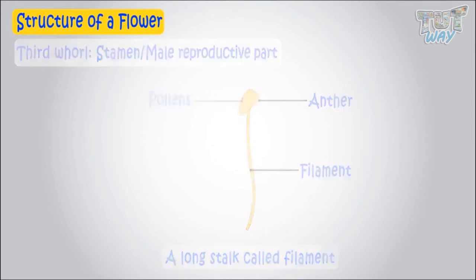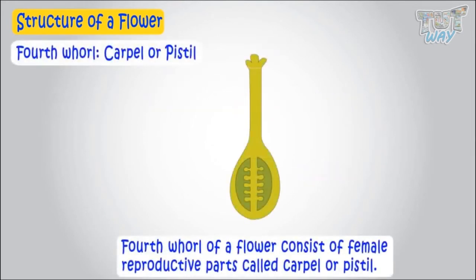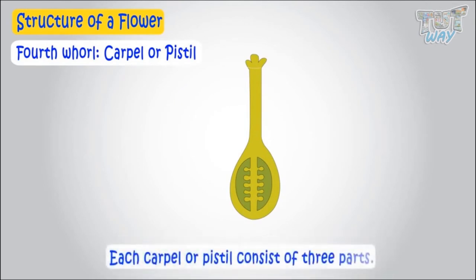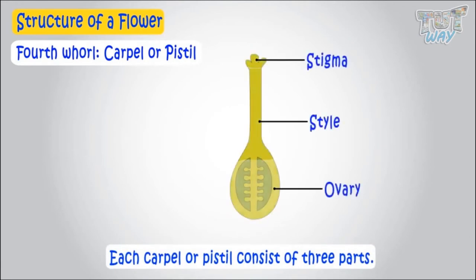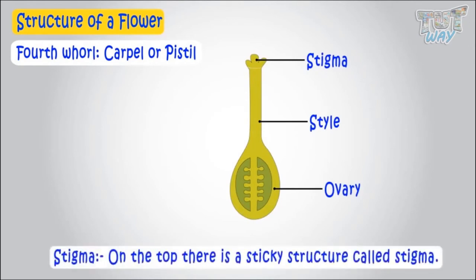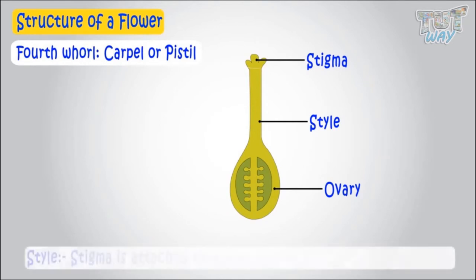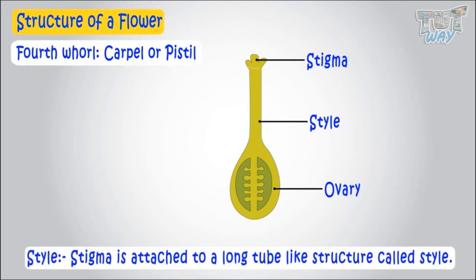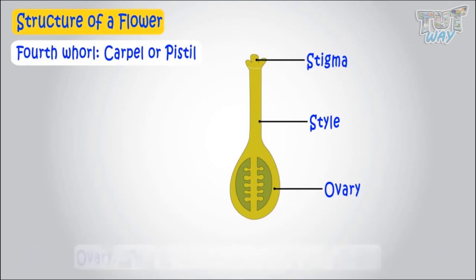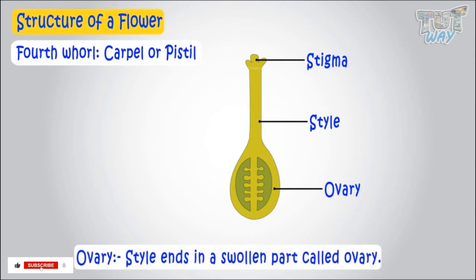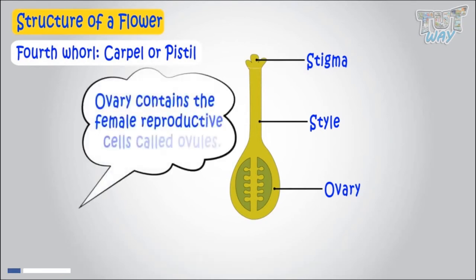The fourth whorl of a flower consists of female reproductive parts called the carpel or pistil. Each carpel or pistil consists of three parts: stigma, style, and ovary. On the top there is a sticky structure called the stigma, and this stigma is attached to a long tube-like structure called the style. The style ends in a swollen part called the ovary, and this ovary contains the female reproductive cells called ovules.